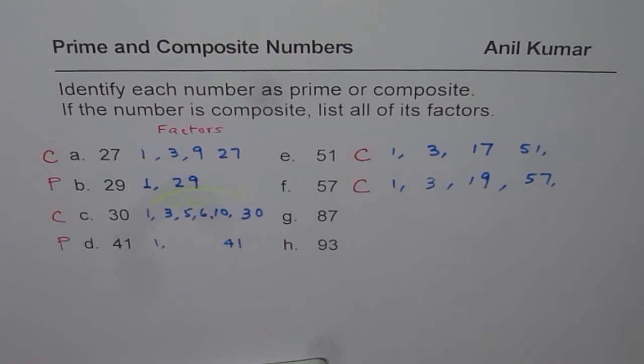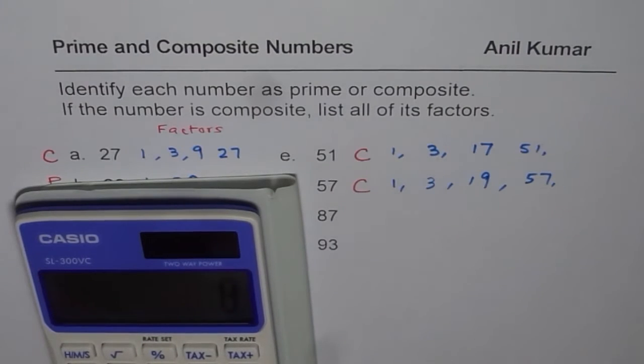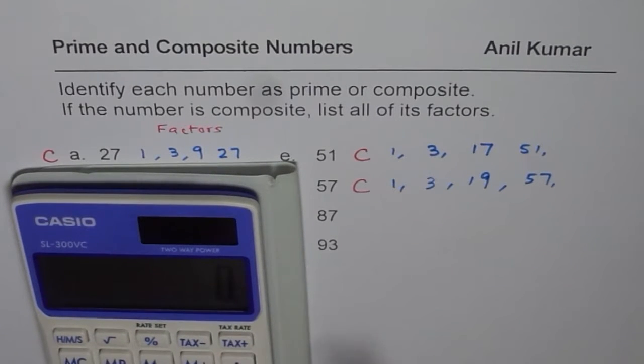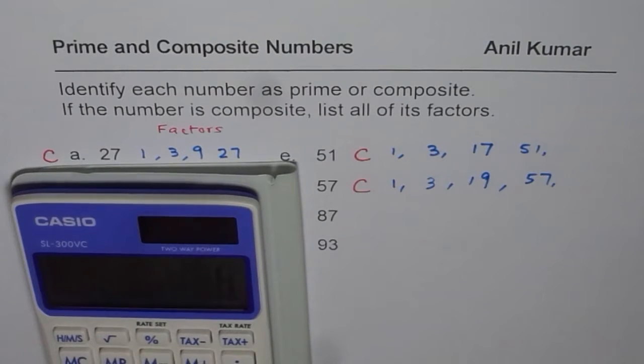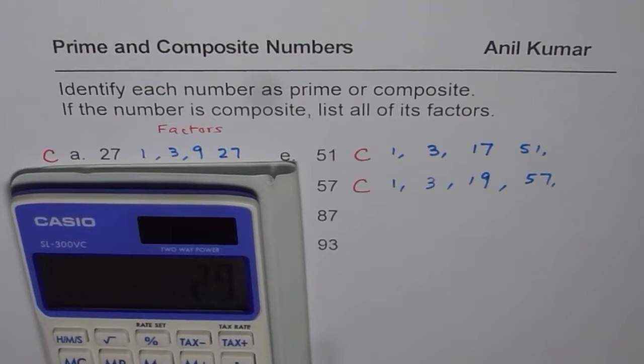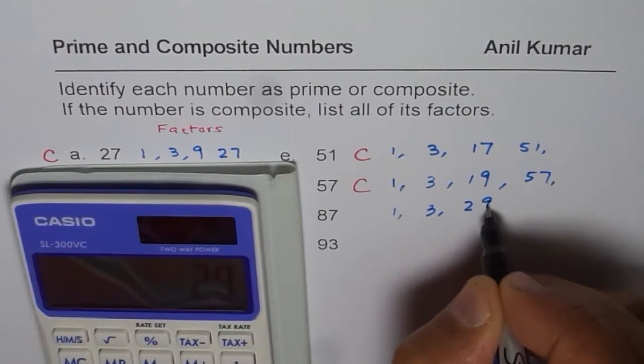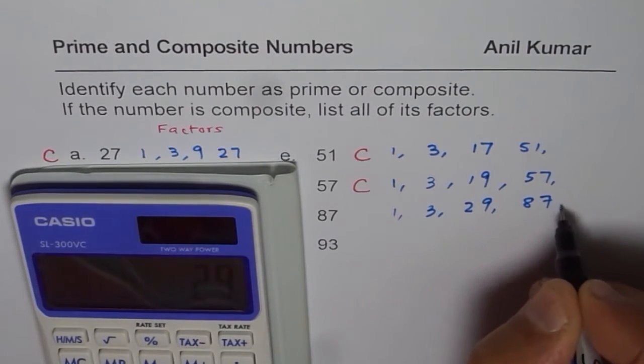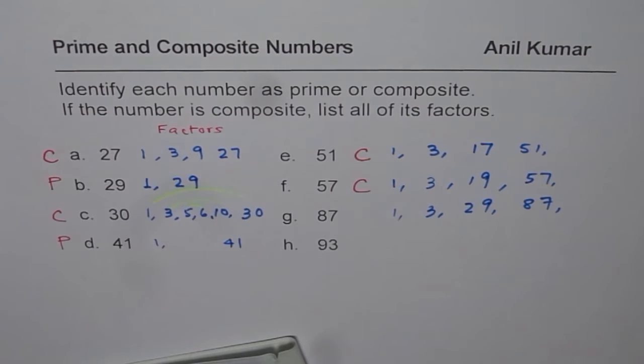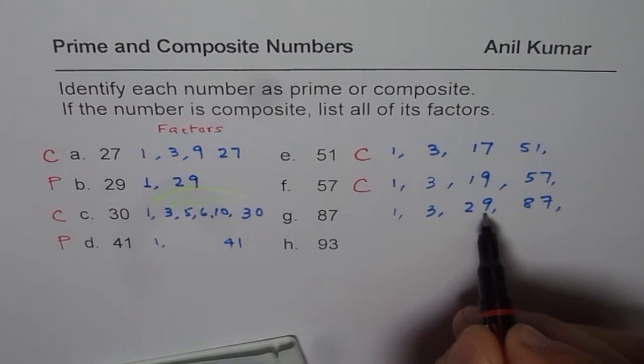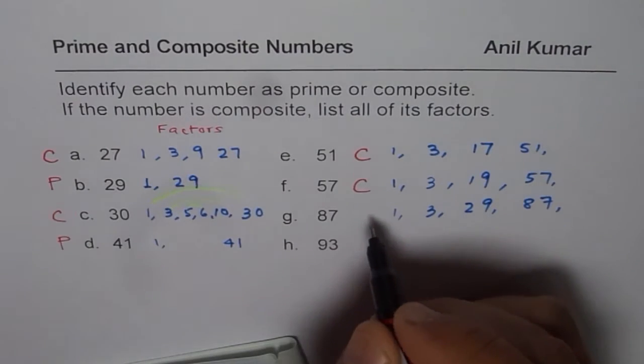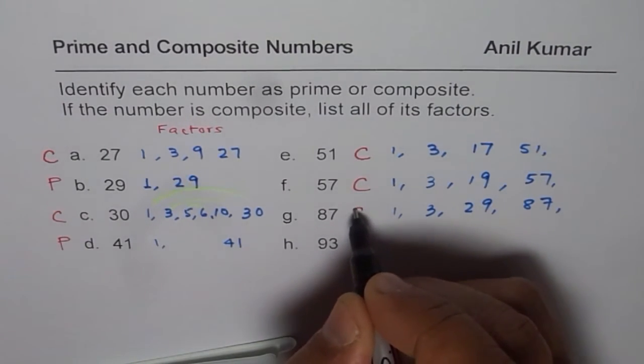Similarly, let's do 87. So when I add 8 and 7, what do I get? I get 15. 15 can be divided by 3. Therefore, 3 is a factor. So for 87, let's divide 87 by 3. You get 29. Purposely, I've taken these numbers since I've seen in test papers that students sometimes make a mistake. And these are the numbers which are tricky. So 87 has 3 and 29 as its factor. Since the number of factors are more than 2, it is also a composite number.